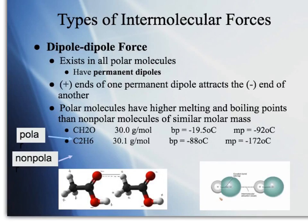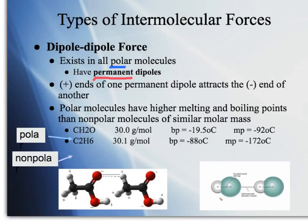Dipole-dipole forces are permanent dipoles — not instantaneous. In polar molecules, we have clear positive and clear negative sides of the molecule because of unequal sharing of electrons. That's the difference between an instantaneous versus a permanent dipole. In polar molecules with permanent dipoles, the positive ends of one attract the negative ends of another.